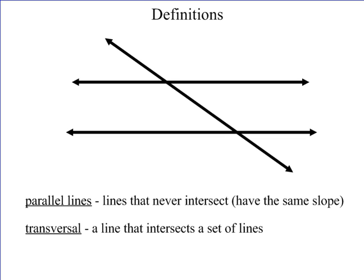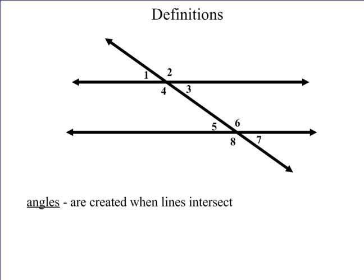When a transversal crosses two parallel lines, we will have angles — eight of them will be created — and there are special relationships that those angles have. We're going to go through those angles.